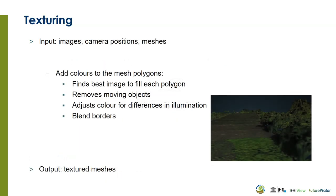After creating the mesh we can add textures. It uses the images, the camera positions, and the meshes from the previous step. Then it adds colors to the mesh polygons. It finds the best image to fill each polygon, removes moving objects, adjusts colors for differences in illumination, and blends the borders between the meshes. The output is the textured meshes.